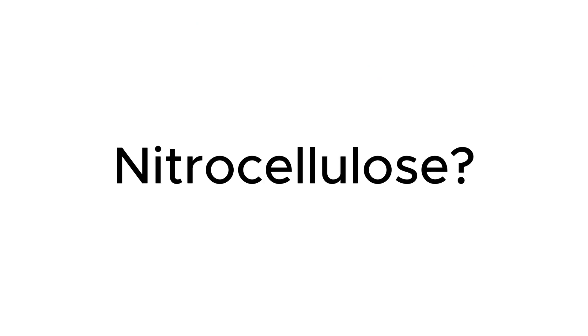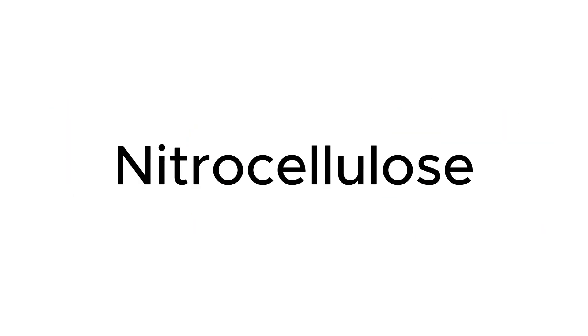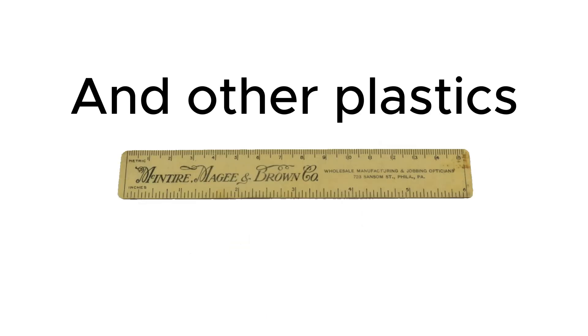But first, what is nitrocellulose? Nitrocellulose is the nitro-derivative version of cellulose. Nitrations are when a nitro group attaches to a hydroxyl group. Nitrocellulose also used to be used to make celluloid used in film and other plastics.